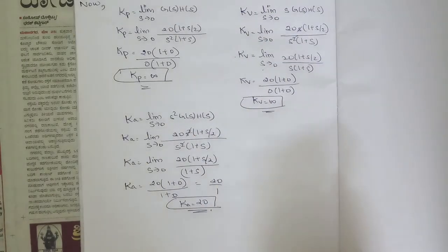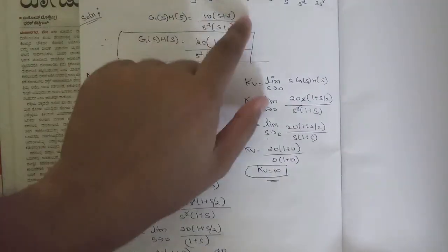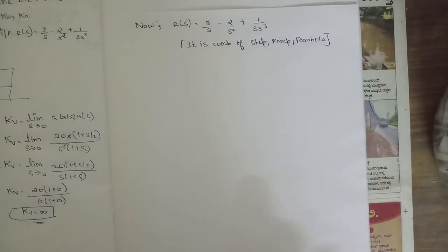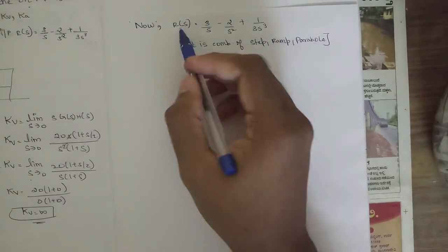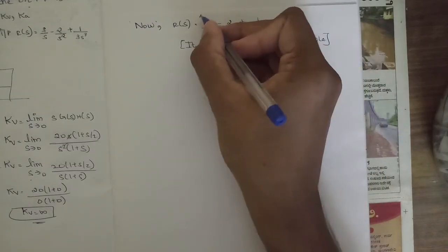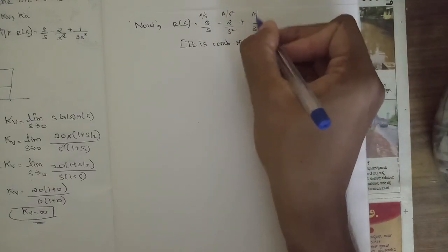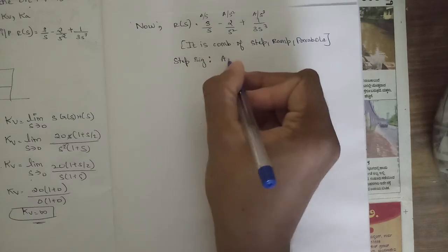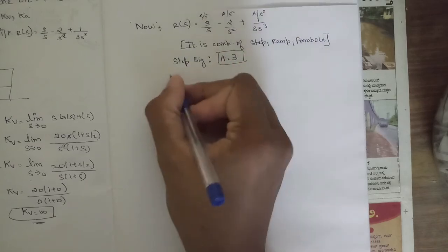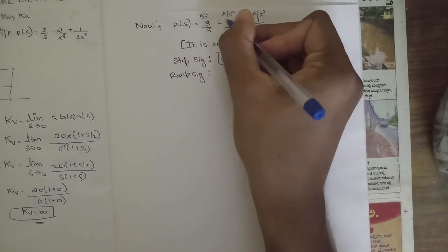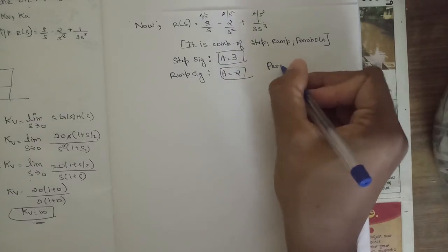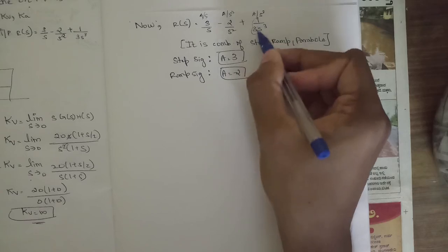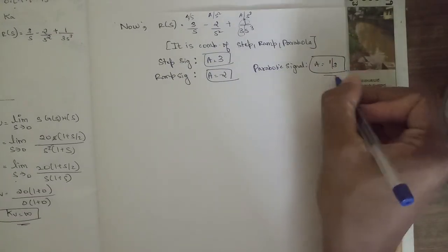Now finding the steady-state error for R(s) = 3/s − 2/s² + 1/(3s³). In the s-domain, a step signal is A/s, a ramp is A/s², and a parabolic signal is A/s³. So for the step component, A = 3; for the ramp component, A = −2; and for the parabolic component, A = 1/3.